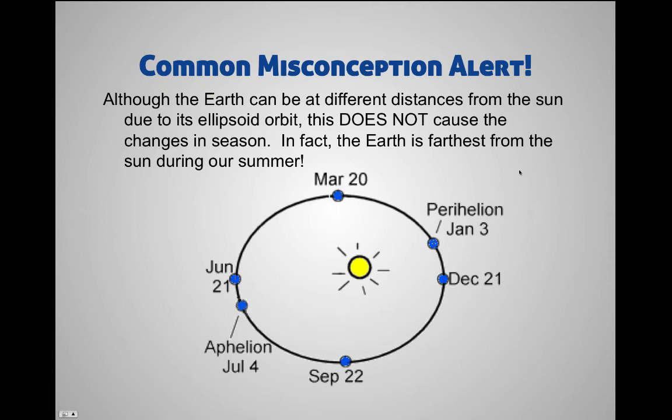Now, a common misconception — we talked about this a little bit earlier. Although the Earth can be at different distances from the Sun because of its elliptical orbit, this does not cause the changes in season. It turns out that the Earth is actually farthest from the Sun during our summer months. Looking at this diagram, the farthest point the Earth is from the Sun — which is called the aphelion — is on July 4th. Historically a pretty hot day during the year, right in the dead middle of summer, and we're farthest away from the Sun.